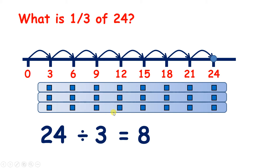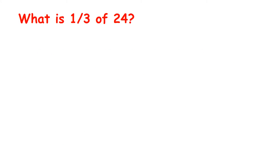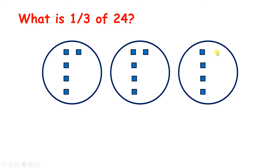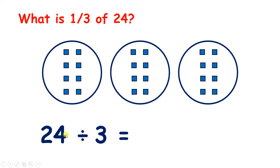Or, if we divide 24 into 3 groups, we have 8 in each group. We could have found this by counting out 1 through 24, sharing between 3 groups. So we have 8 in each group. So 24 divided by 3, or a third of 24, is 8.